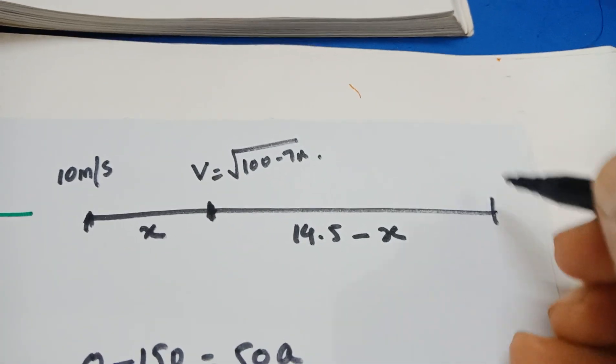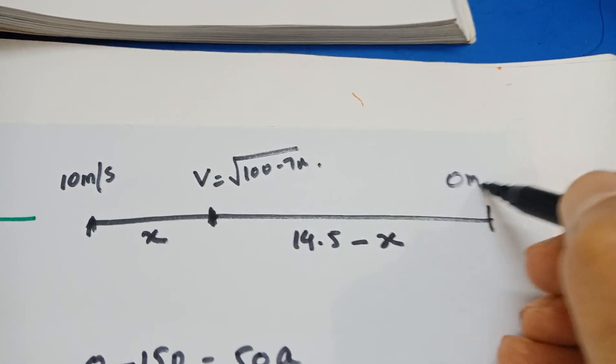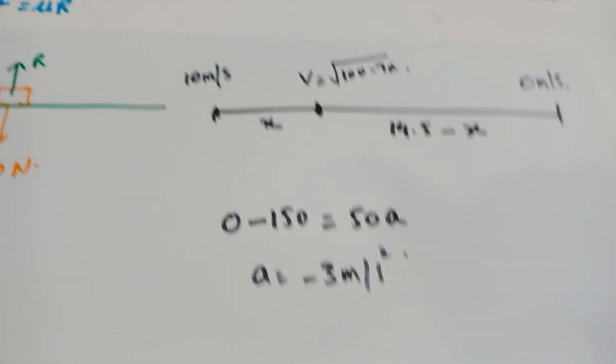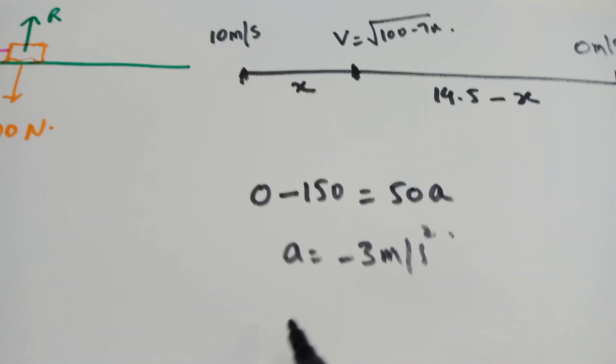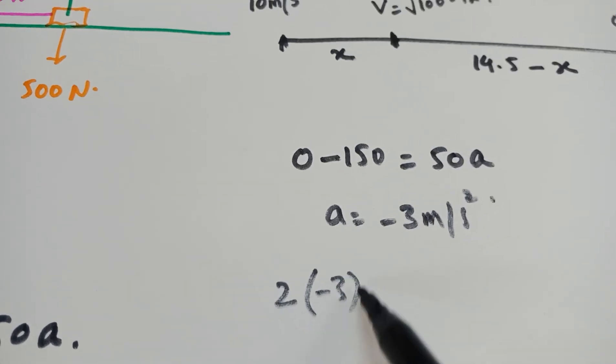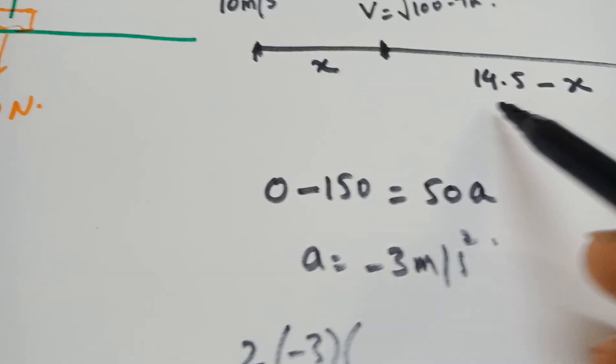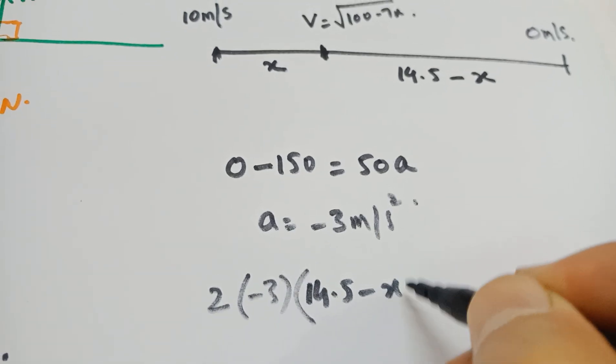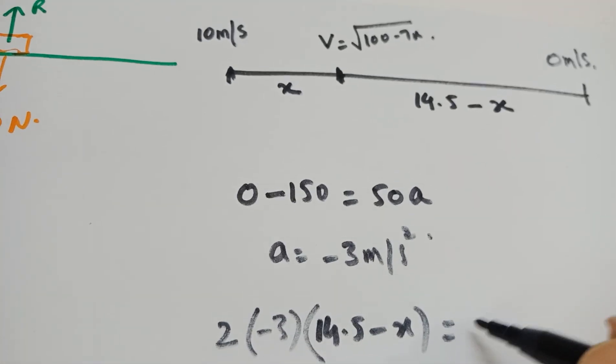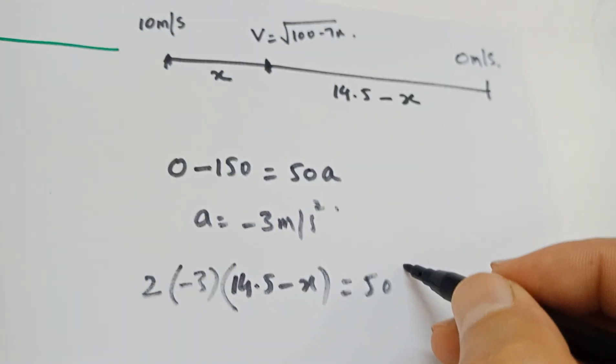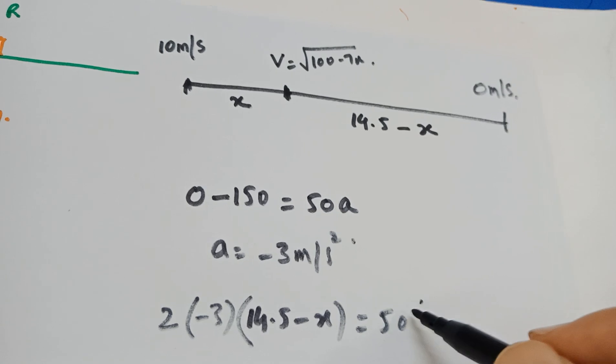So now we know that here the final speed will be zero because it has stopped after covering a distance of 14.5. So I'll be using, you see, this is all algebra. So I'll be saying now 2 into A into S. Now, the S is going to be this 14.5 minus X. It says 14.5 minus X. That is equal to V squared,